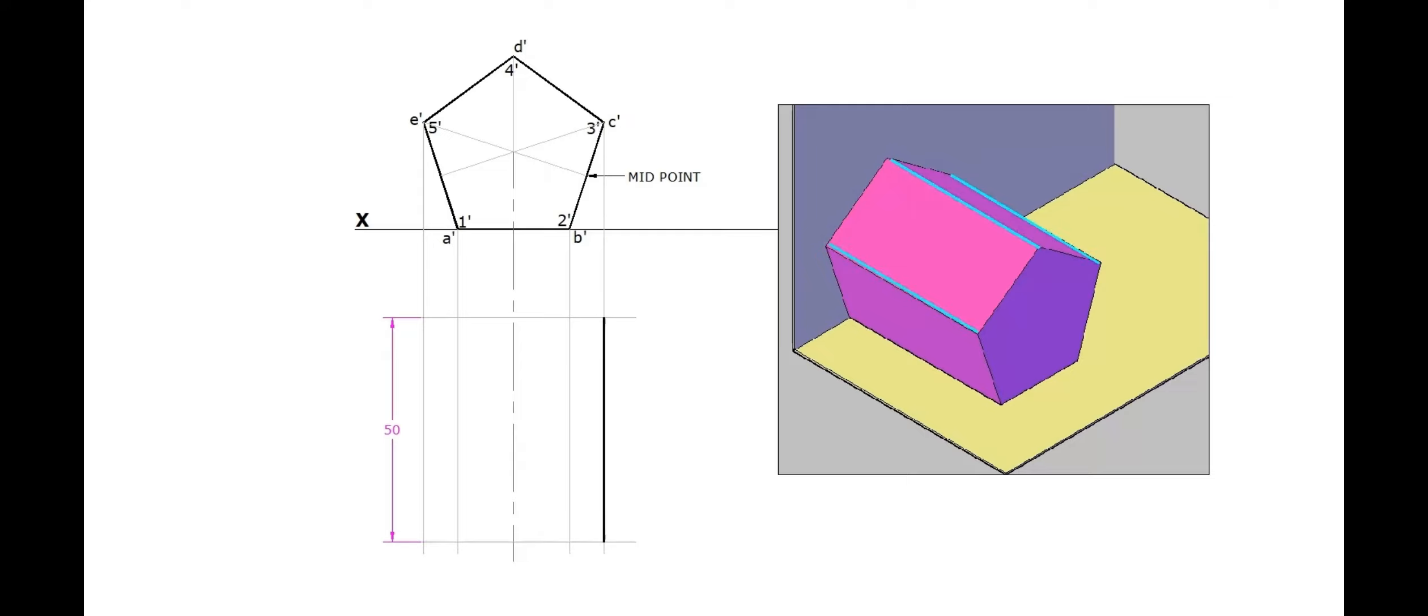The longer edges 3C, 4D, and 5E are visible in the plan. The bases, which are perpendicular to HP, are visible as straight lines in the plan. The longer edges 1A and 2B, which are part of the rectangular face on which the object is resting on the ground, are invisible. Name the points accordingly.